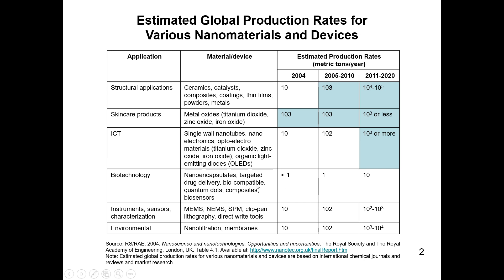That was the beginning of nanomaterials in biotechnology. For instruments, sensors, and characterization applications, we have devices built from nanomaterials including MEMS, NEMS, SPM, CLEFAM, and lithography direct write tools. Their production was 10 metric tons per year in 2004, estimated at 10² metric tons per year from 2005 to 2010, and increasing to 10² to 10³ metric tons per year from 2011 to 2020.